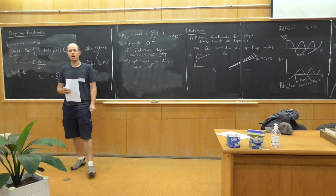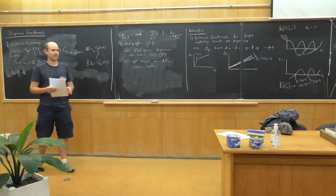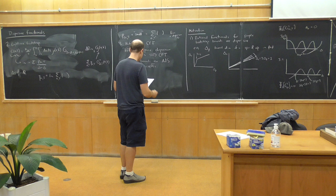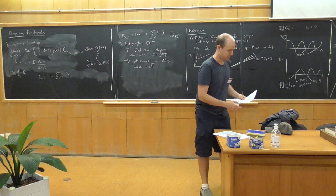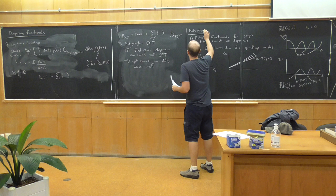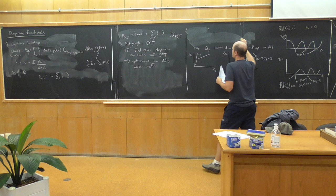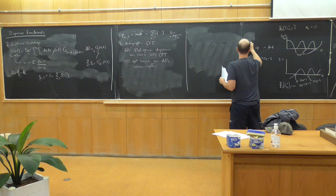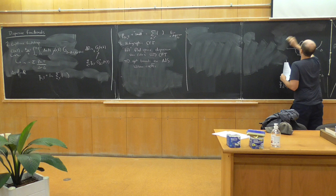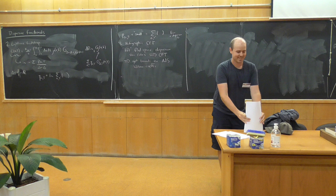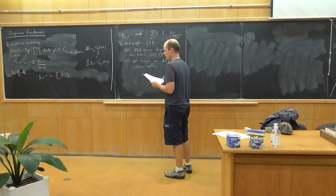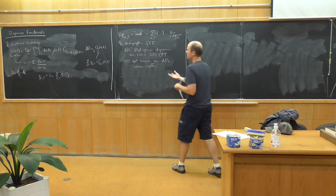So hopefully I'll be able to describe this in much more detail later. I'll talk about two different constructions of dispersive functionals that will end up being the same. The first one is in position space, and the second one is in Mellin space. Today I'll probably only have time to talk about position space. So we're going to talk about a construction of dispersive functionals from position space.